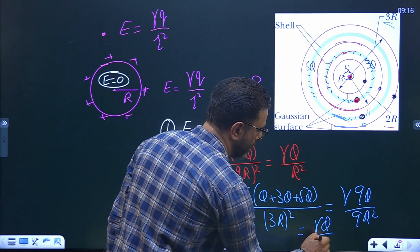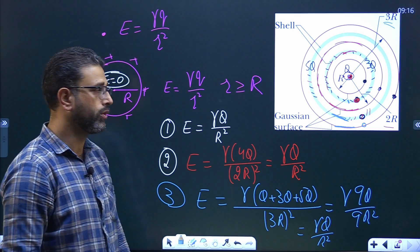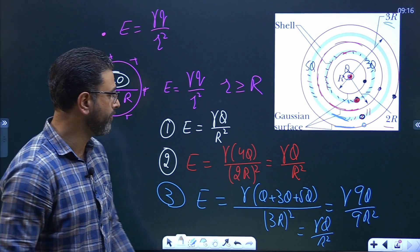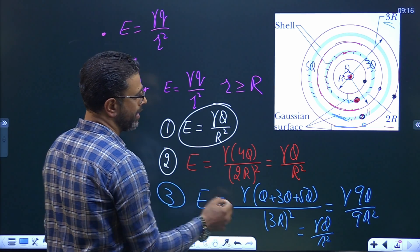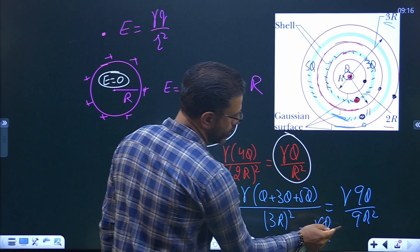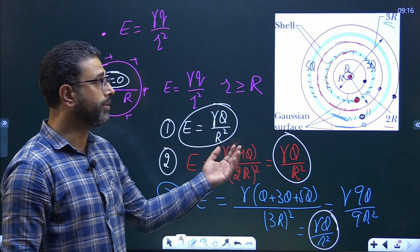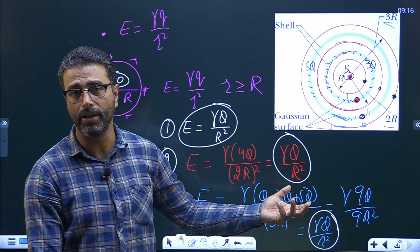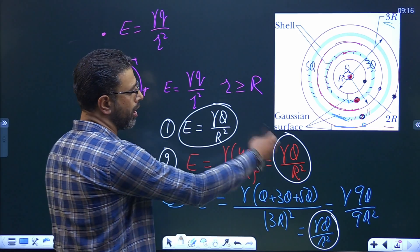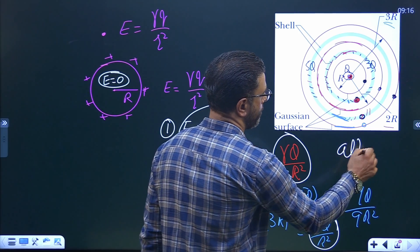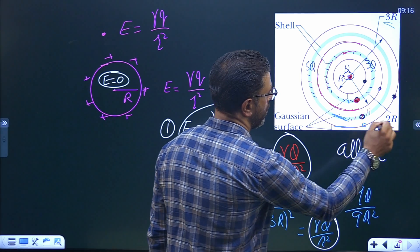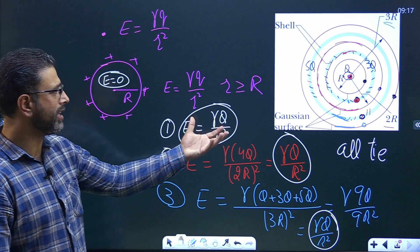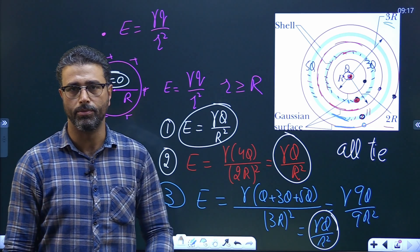All three Gaussian surfaces give the same electric field magnitude γQ/R², so all of them tie. With a proper understanding of Gauss law, this problem is actually very simple.